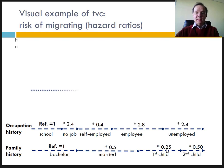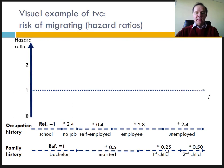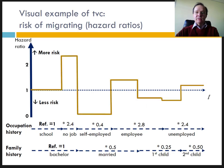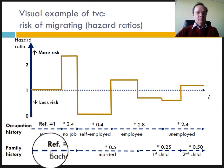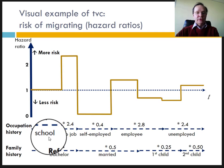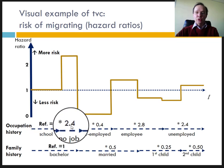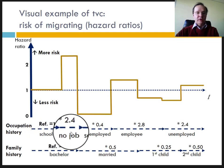Let's see how to represent these different changes, representing the risks of migrating throughout a lifeline. Values of hazard ratios greater than 1 indicate more risk of migrating; values between 0 and 1 indicate lower risk of migrating. The Cox model provides risk relative to the reference category. After a period of celibacy and being at school, this woman saw her chances increase by 2.4 during a period of unemployment.